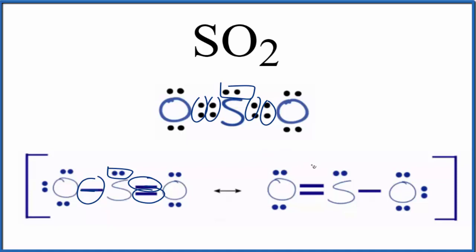But either way, that's how you count the lone pairs and bonding pairs of electrons for SO2, sulfur dioxide. This is Dr. B, and thanks for watching.